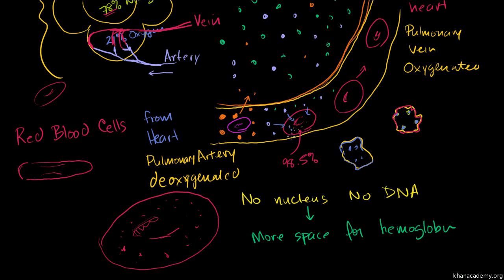Now, one interesting question is: why does the hemoglobin even have to reside within the red blood cells? Why aren't hemoglobin proteins just freely floating in the blood plasma? That seems more efficient — you don't have to have things crossing in and out of these red blood cell membranes, and you wouldn't have to make red blood cells. What's the use of having these containers of hemoglobin? It's actually a very interesting idea.